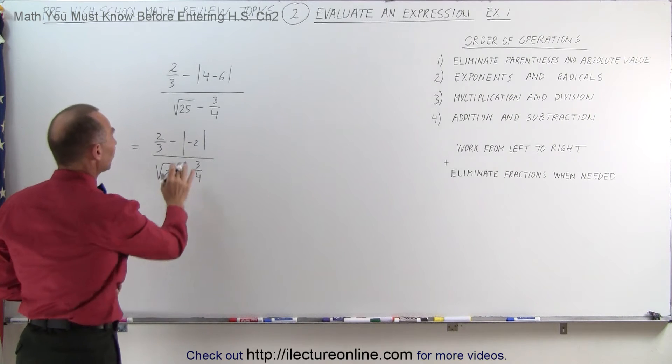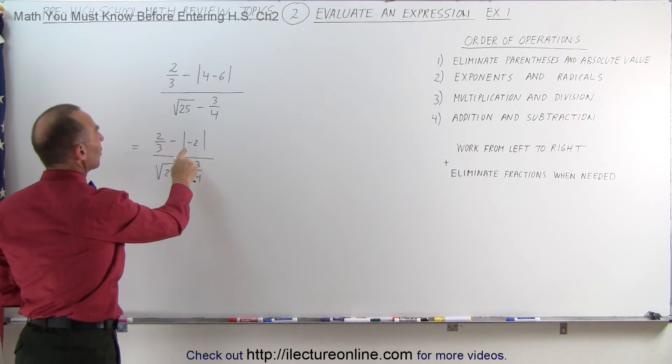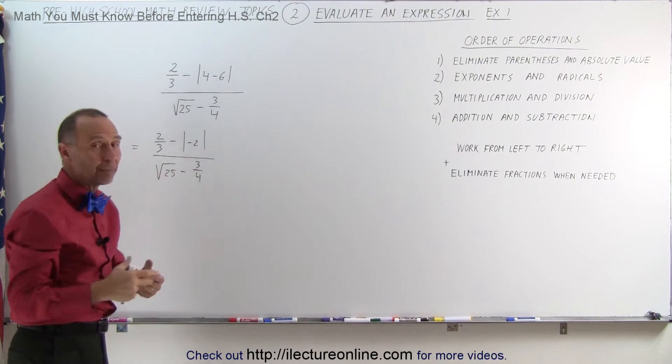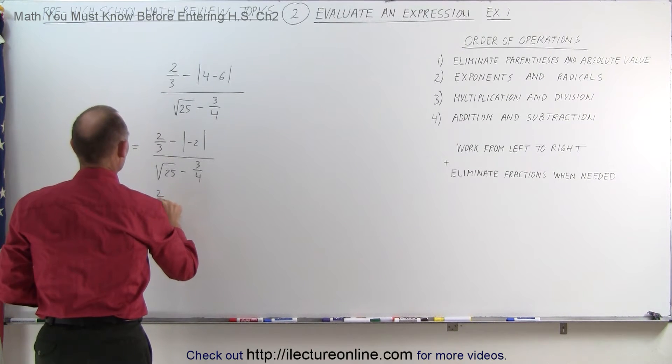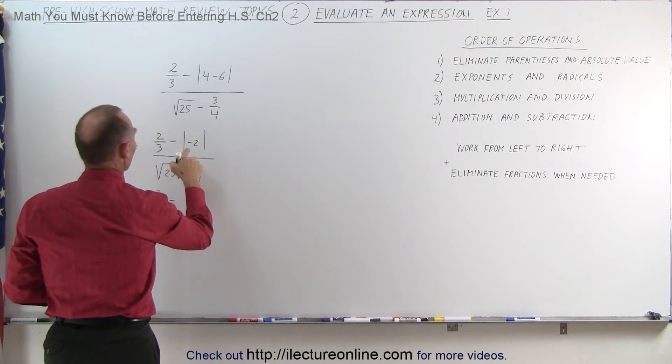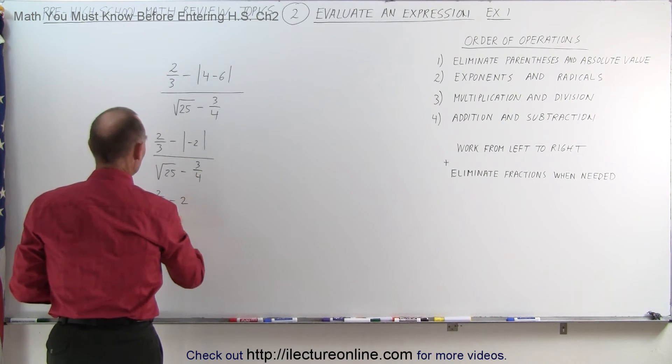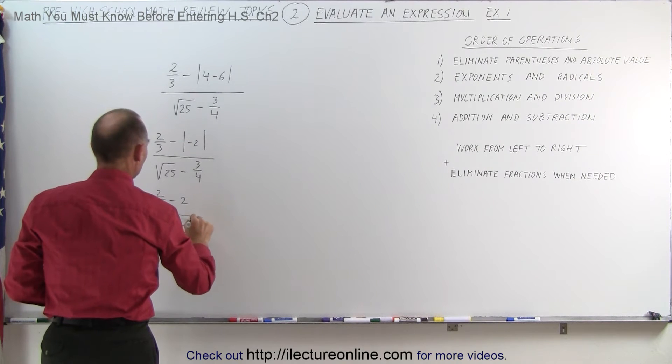Notice we're not yet tackling the fractions - we'll get to that in just a moment. We still need to get rid of the absolute value symbol. So when we take the absolute value of a negative number, that becomes a positive number. So this becomes equal to 2/3 minus the absolute value of -2, becomes a positive 2, divided by the square root of 25 minus 3/4.